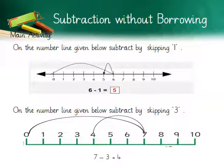Let's do some practice of subtraction on the number line. The first given sum is 6 minus 1. The number line goes from 0 to 10. You start from 6, skip one number backwards, and drop at 5. So 6 minus 1 equals 5. On this number line, we subtract by skipping 1.